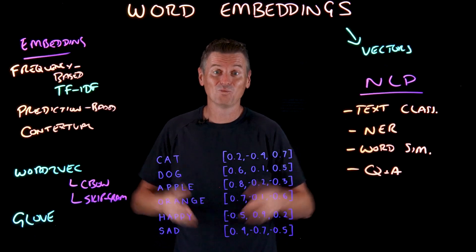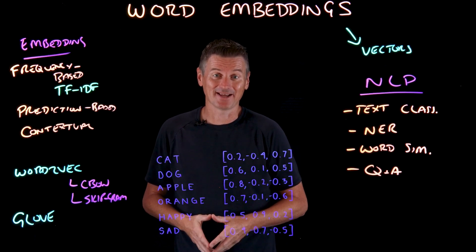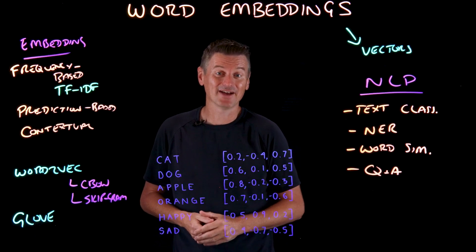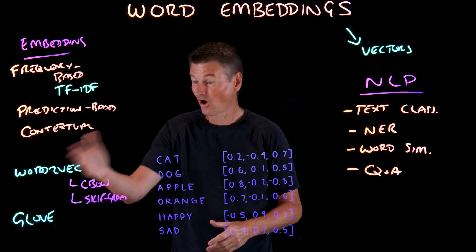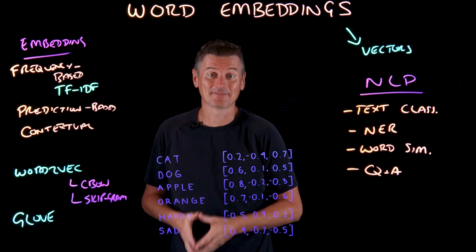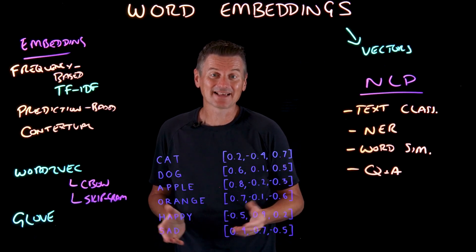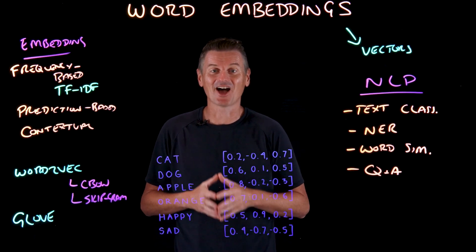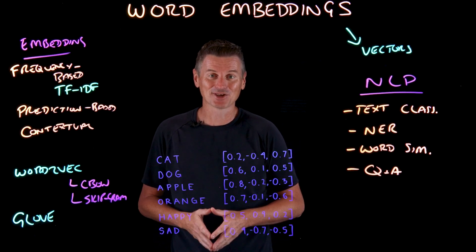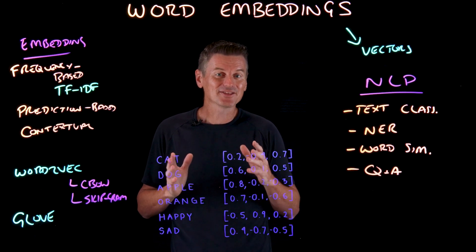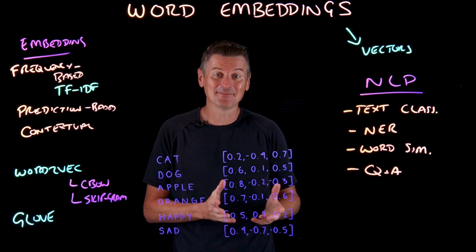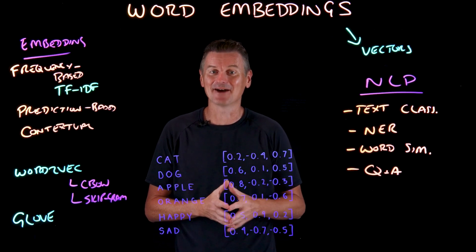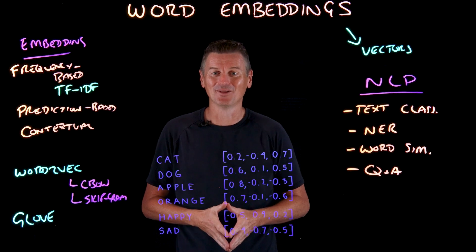So that's word embeddings. From simple numeric vectors to complex representations, word embeddings have revolutionized how machines understand and process human language, proving that transforming words into numbers is indeed a powerful tool for making sense of our linguistic world.